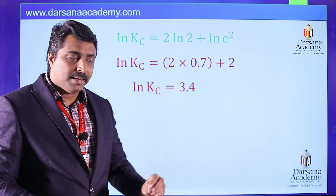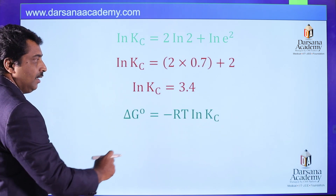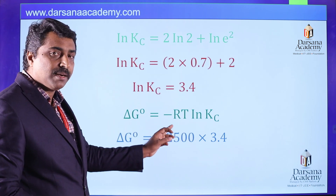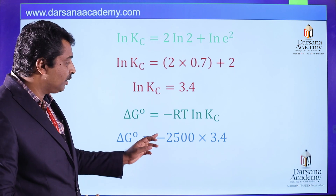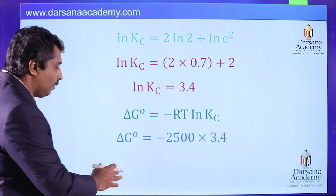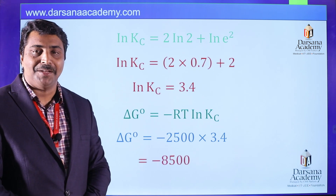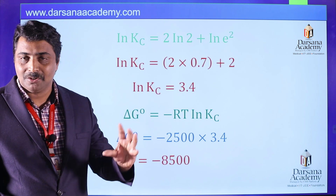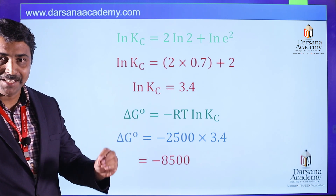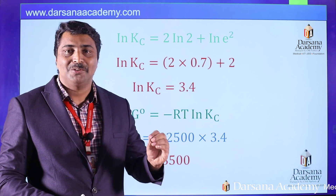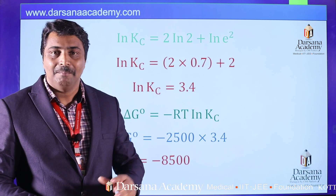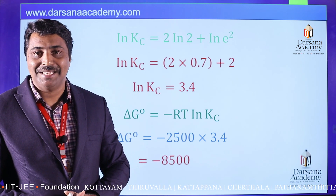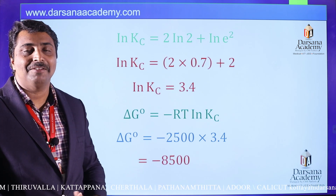Substituting the value of ln(KC) into delta G zero equals minus RT times ln(KC): delta G zero equals minus RT times 3.4. The value of RT from the question is 2500, so delta G zero equals minus 2500 times 3.4, giving delta G zero equals minus 8500. This solution used thermodynamics, chemical equilibrium, and the Arrhenius equation from chemical kinetics.